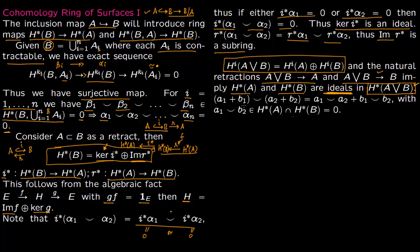So in H*(A ∨ B), elements look like (a_1, b_1) and (a_2, b_2). Taking the cup product: (a_1 + b_1) ∪ (a_2 + b_2) = (a_1 ∪ a_2) + (b_1 ∪ b_2). The cross term a_1 ∪ b_2 lies in the intersection of the two ideals, which is zero. So the cup product in H*(A ∨ B) acts component-wise: (a_1 ∪ a_2) ⊕ (b_1 ∪ b_2).